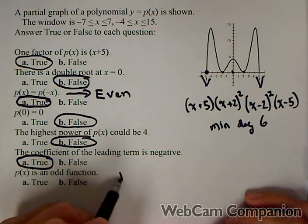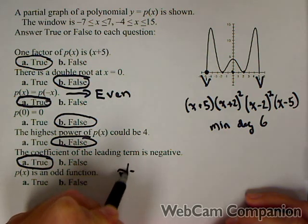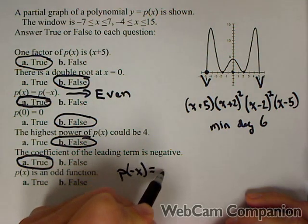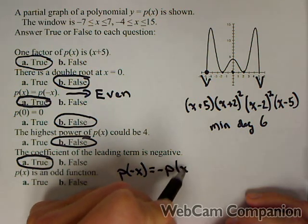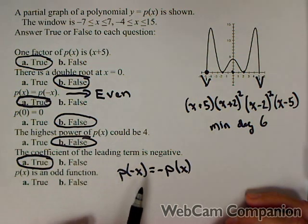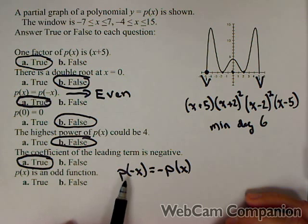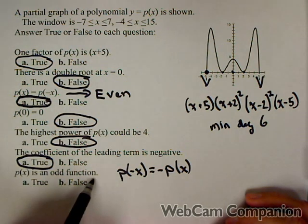p(x) is an odd function. This means p(-x) equals -p(x). Well, it's possible for a function to be both even and odd. So we already know it's even. It has to be false.